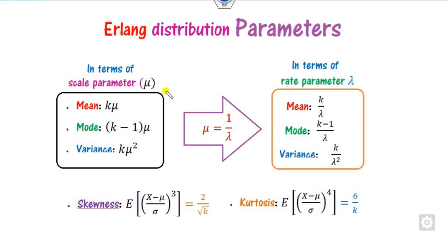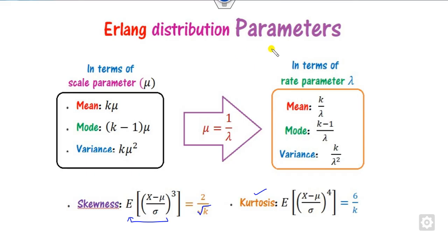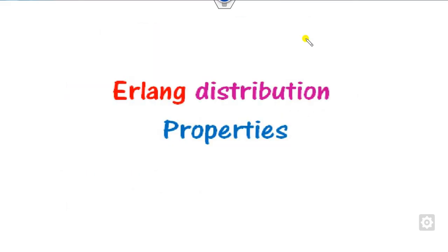Apart from mean and variance, you can also find the skewness and kurtosis. The skewness is totally dependent on the value of K, and the kurtosis is 6/K. These are defined based on the scale parameters of the distribution.